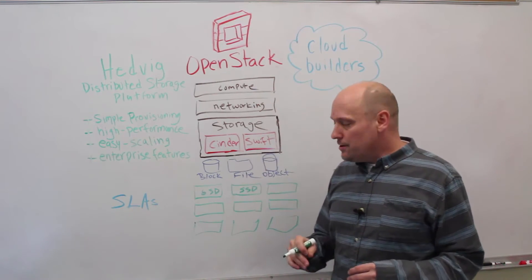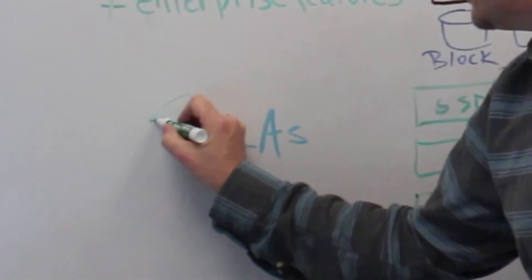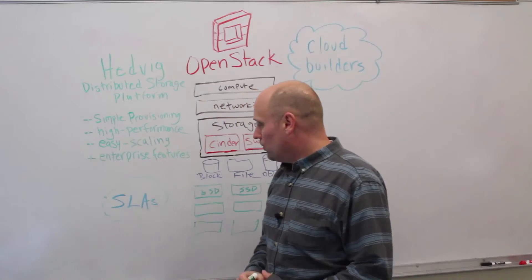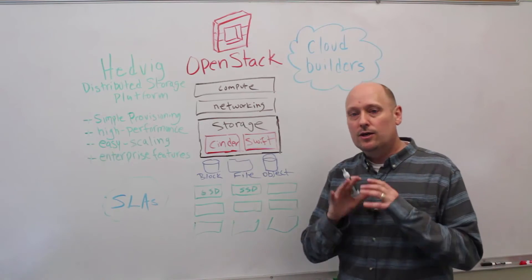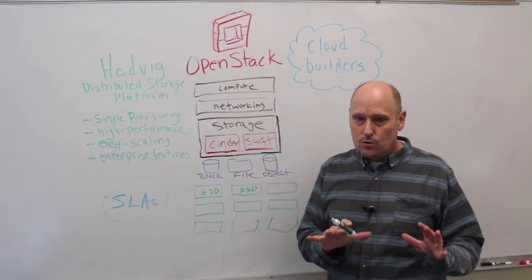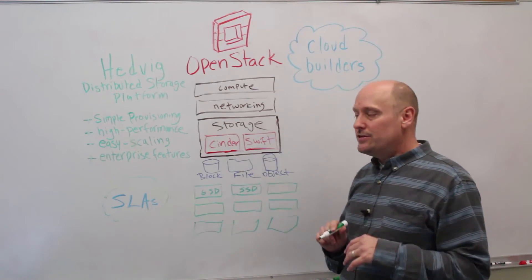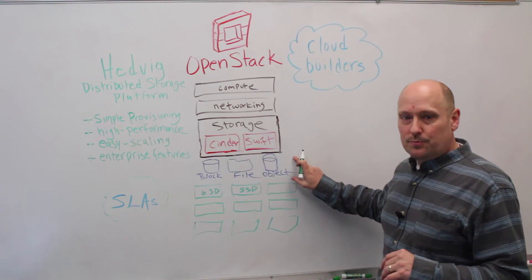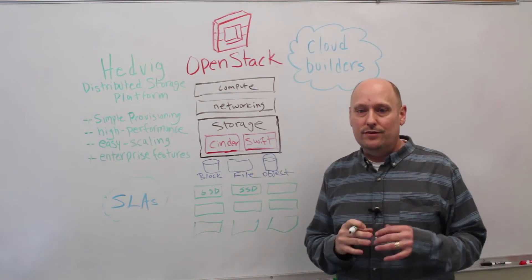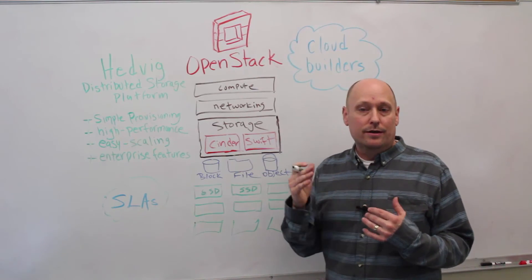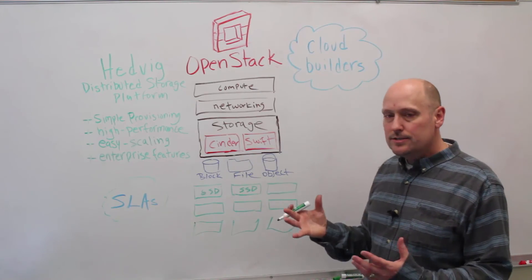Hedvig provides granular policy settings so you can easily create distinct service levels for OpenStack storage. And finally, object storage is becoming increasingly popular for storing all that data destined for the cloud. With Hedvig, you have this option as well. You simply use OpenStack's Swift API, fully supported by Hedvig, to provision object storage, define containers, and upload objects into these containers seamlessly.